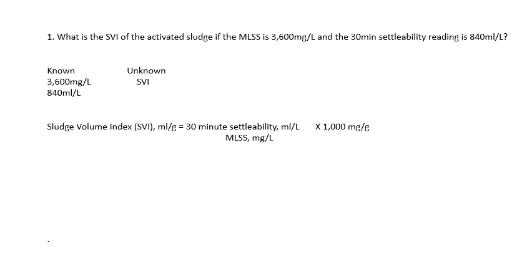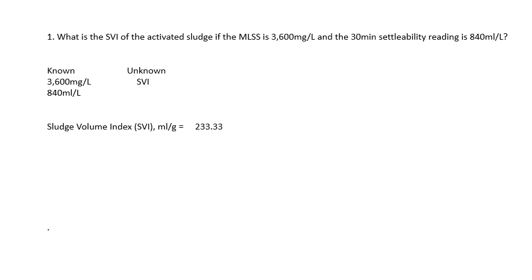Using the Sludge Volume Index formula, we plug our numbers in: 840 milliliters per liter divided by 3600 milligrams per liter, times 1000 milligrams per gram. Everything cancels out and you're left with 233.33 milliliters per gram.